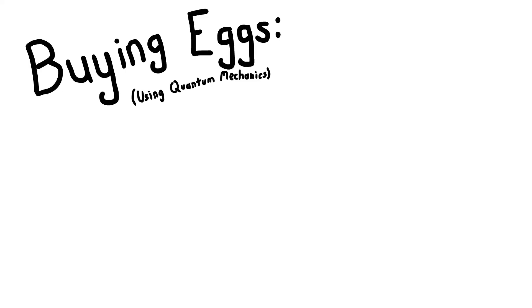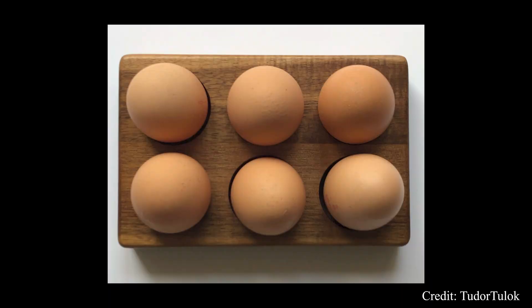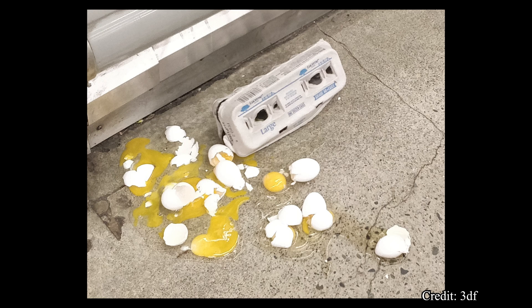Imagine you're trying to buy some eggs, and you have to choose between quantity and quality. You can sacrifice quantity and get six really good eggs, or you can sacrifice quality and get twelve not so great eggs, but you can't have both. The Heisenberg uncertainty principle is no different.